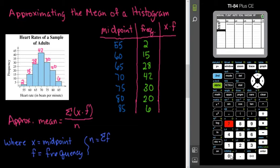So, let me clear this information out. And so, I have 55, 60, 65, 70, 80, and 85.